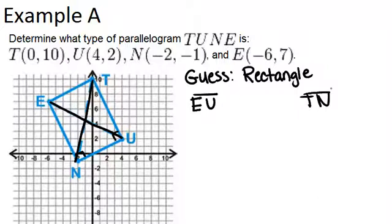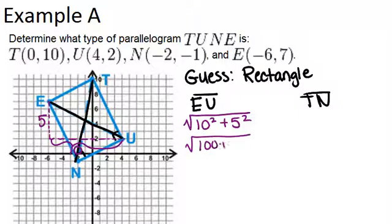So to find the length of EU, we need to look at our graph and find the change in the x-coordinates as we go from E to U, as well as the change in the y-coordinates. So the change in the x-coordinates is 10, because there are 10 squares going from E over to U, and the change in the y-coordinates is 5. So that means that the length of EU is the square root of 10 squared plus 5 squared. So that would be the square root of 100 plus 25, or the square root of 125.